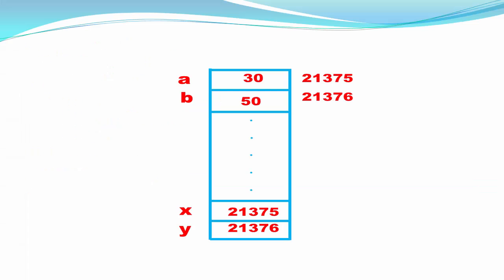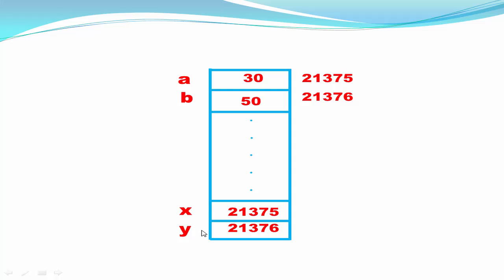Let's see how it works. Suppose this is computer memory — a is stored in one memory location, b is stored in some other memory location. We assume that a is stored in memory location 21375 and b is stored in memory location 21376. When we call the swap function and pass the address of variables a and b, then the variables x and y hold the address of a and b. X holds the address of a, which is 21375, and y holds the address of b, which is 21376.